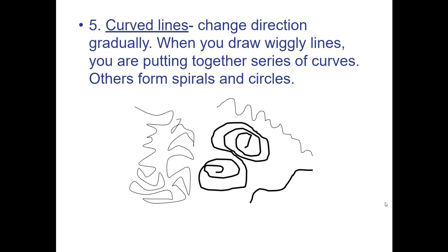Number five, curved lines. This is how they change direction. They could be gradual—more wavy or wiggly—or closer together, forming spirals and circles.